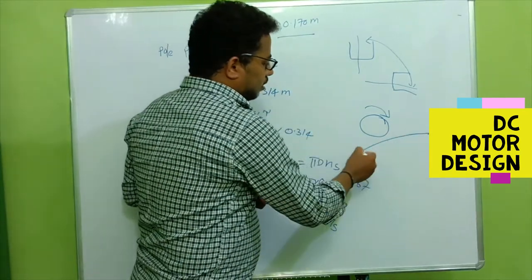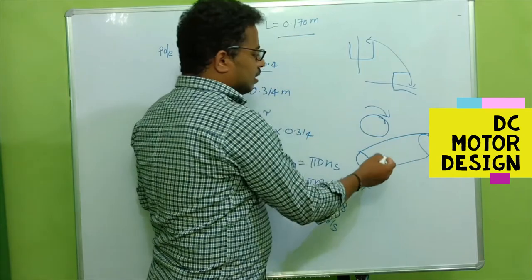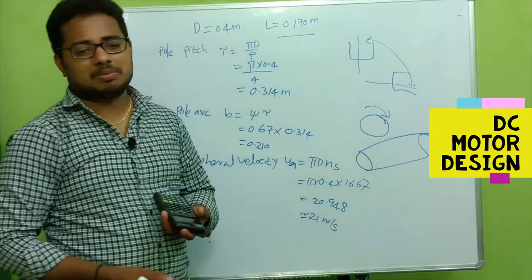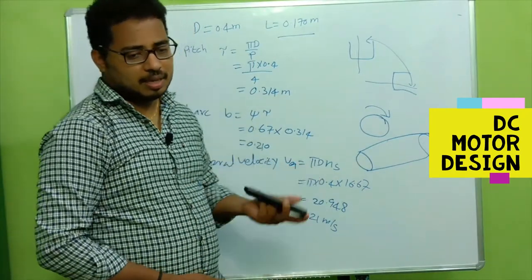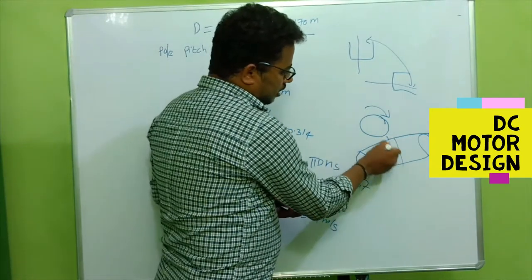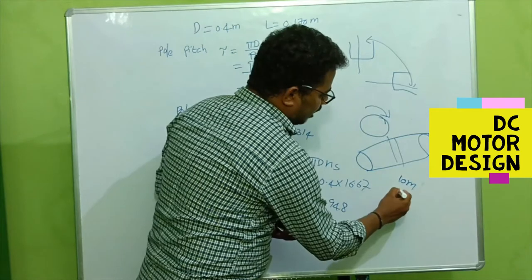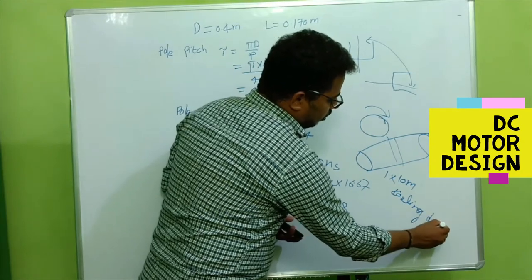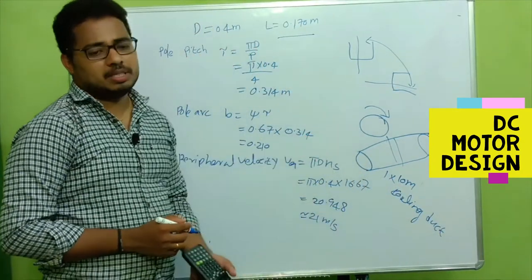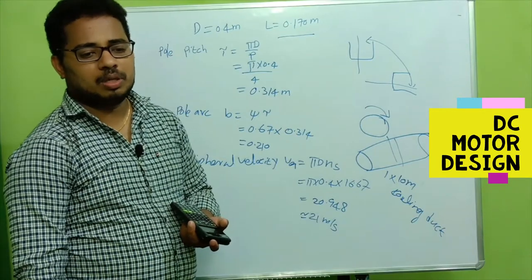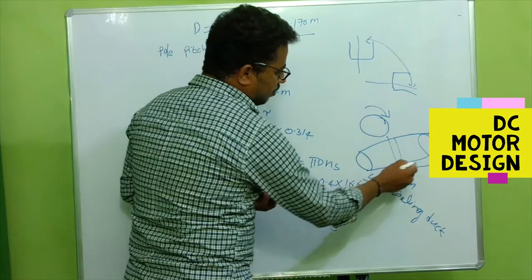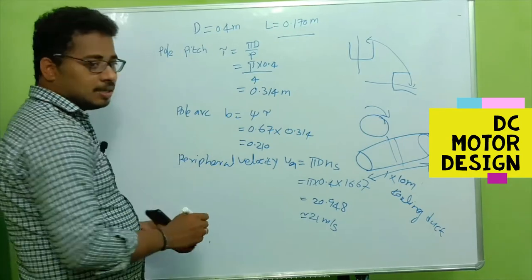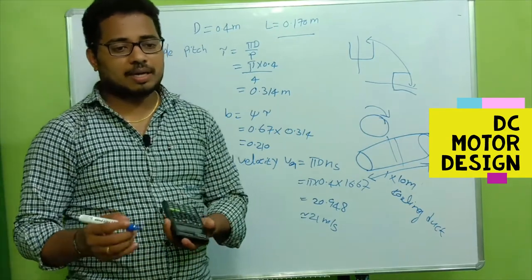We already calculated this length as 170 mm. This is a bigger length, so cooling becomes very difficult for the armature. For this much length, at least we should use one cooling duct - minimum one 10 mm cooling duct on this armature core. Then the cooling will be much better. From the entire length of 170 mm, we have to remove the cooling duct area to calculate net iron length.